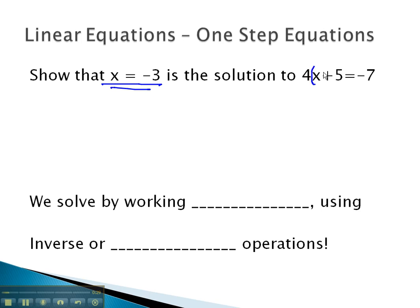That means if I replace the x with negative 3, we should get a true equation. 4 times negative 3 plus 5. Will that equal negative 7? Order of operations tells us to multiply first, giving us negative 12 plus 5. Hopefully, that will be negative 7. Sure enough, negative 12 plus 5 is negative 7, and we get a true equation.